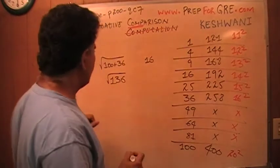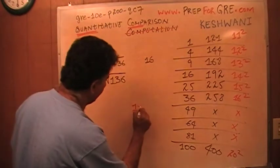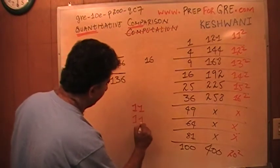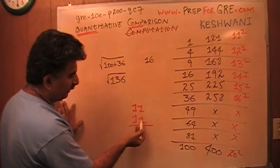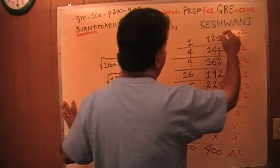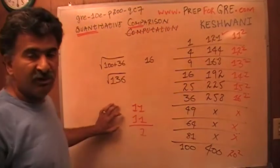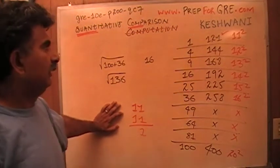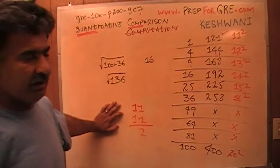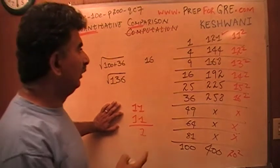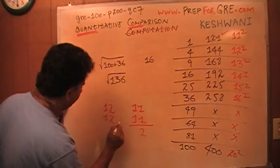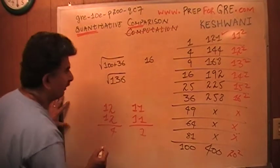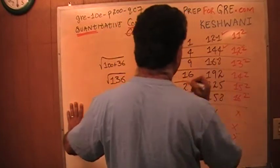For example, square of 11, if you multiply 11 times 11, whatever the answer is, the unit should be 1 times 1, it should end in a 1. That does end in a 1. So at least it has a shot in hell to be right. It doesn't necessarily mean that it is right, but it is not definitely wrong. Square of 12 should end in a 2 times 2, it should end in a 4. That is correct.